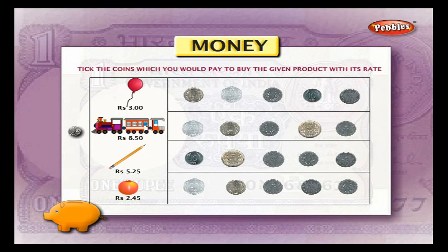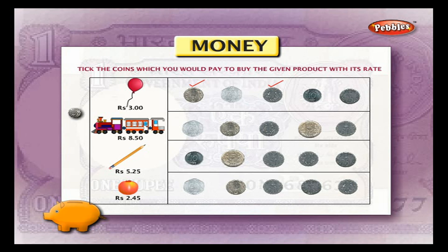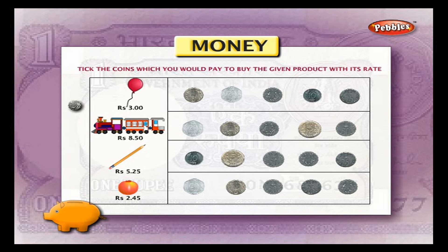Take the coins which you would pay to buy the given product with its rate. The cost of a balloon is rupees 3; for this we should take a 2 rupee coin and a 1 rupee coin. The cost of a toy train is 8 rupees 50 paisa; for this we should take a 5 rupee coin, a 2 rupee coin, a 1 rupee coin, and a 50 paisa coin.